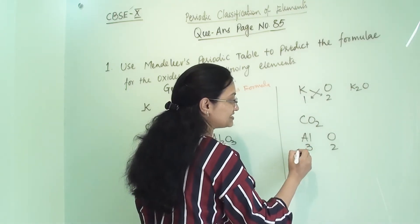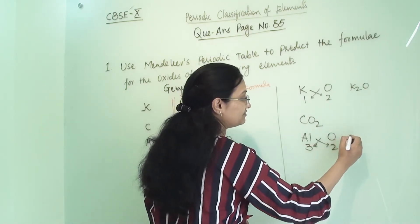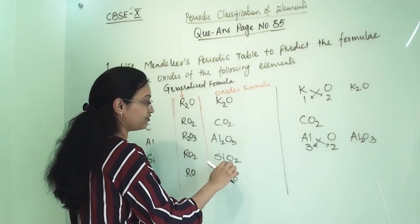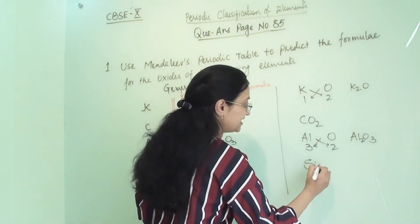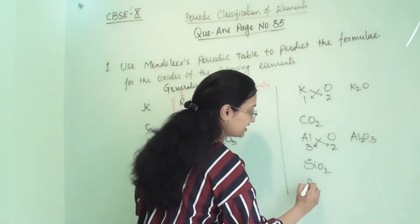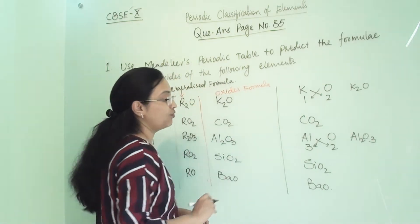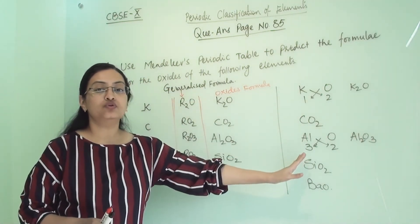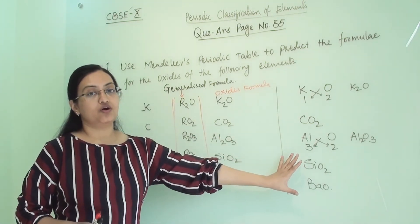So here we will get Al2O3. Similarly for silicon dioxide, SiO2, and for barium oxide, BaO. So that is how we have to write, and in this manner we need to remember the molecular formula of all these important oxides.